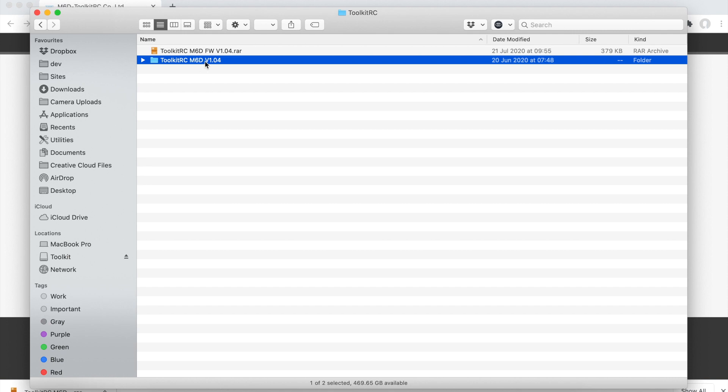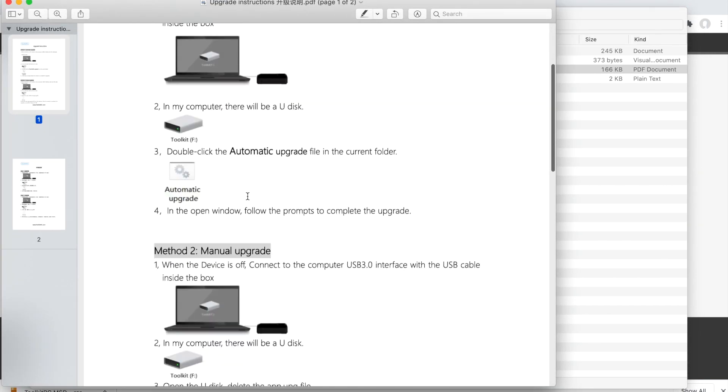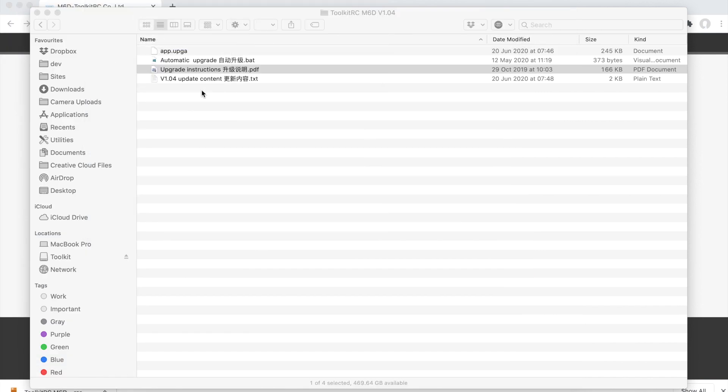Now if we take a look at the downloaded files, App.upgar, short for upgrade I guess, that's the actual binary that's got the new firmware in it. There is a batch file here that you can run if you're on Windows to automatically upgrade, but we're on a Mac so that won't work. Some upgrade instructions here which you can go through, but to be honest it's all pretty straightforward.